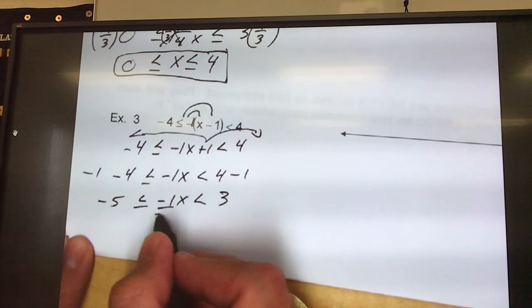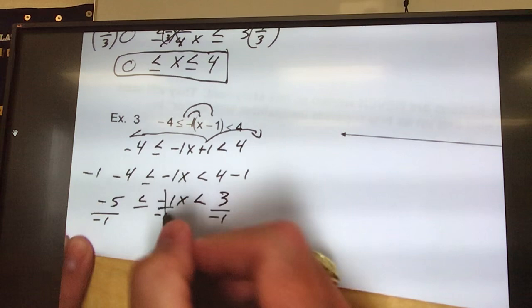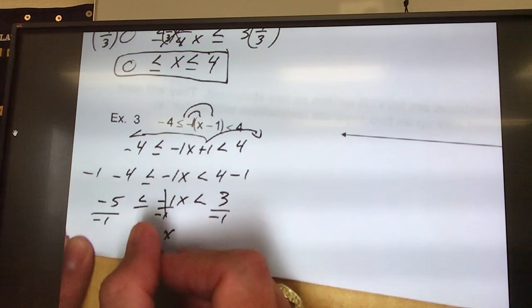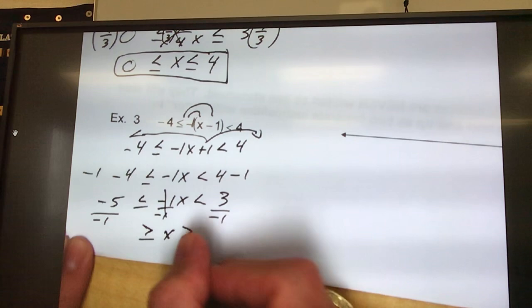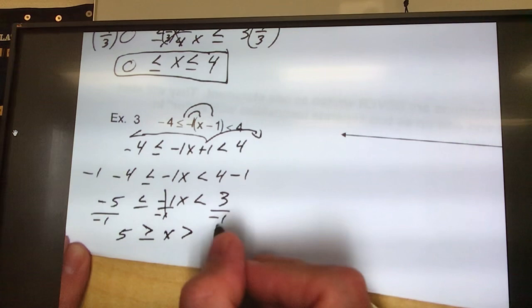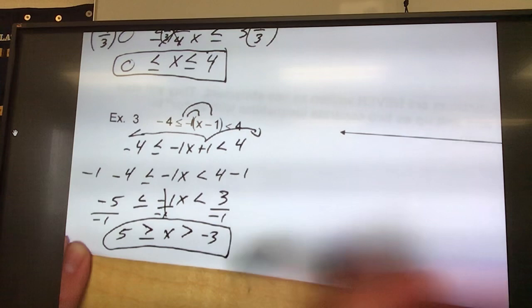Now, I've got to get rid of the negative 1. I don't want negative 1x, I want x. So, when I divide it by negative 1, bells and whistles go off. Beep, beep, beep. I divide by negative. That's how we have to flip these two inequalities. So, this one is no longer a greater than. It is now a less than or equal to. And, this one is no longer a less than. It is now a greater than sign. So, negative 5 divided by negative 1 is a positive 5. 3 divided by negative 1 is negative 3.